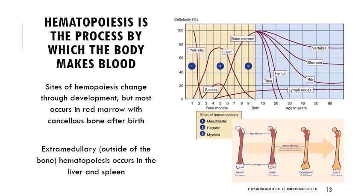When thinking about how blood cells are formed, this process is called hematopoiesis — also called hemopoiesis. The areas where it takes place change over time. In utero, hematopoiesis occurs in the yolk sac, liver, and spleen. Towards the end of fetal development, as bone marrow develops, it shifts there. In very young humans, it occurs a lot in long bones like the tibia and femur, peaking before age 10, then dropping off.